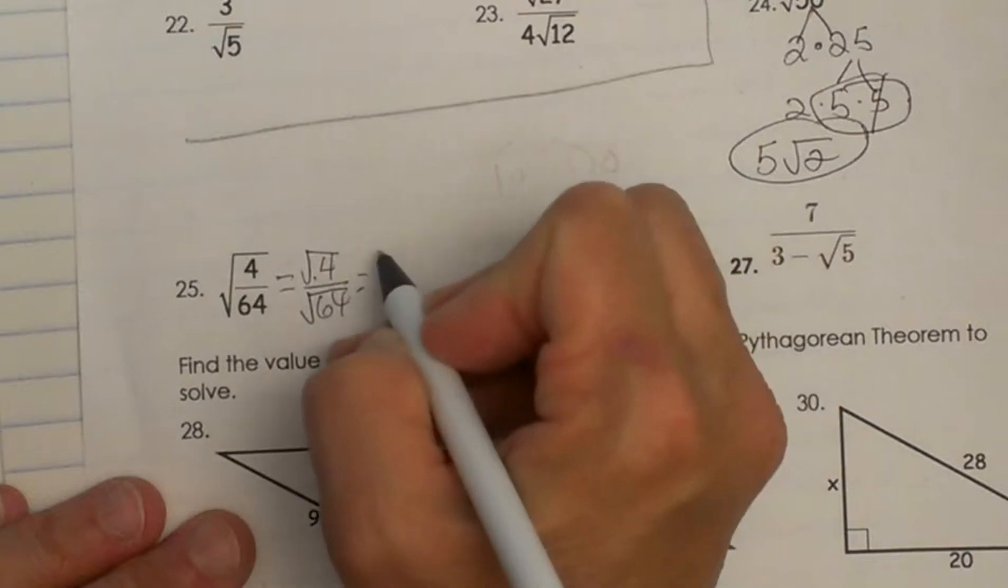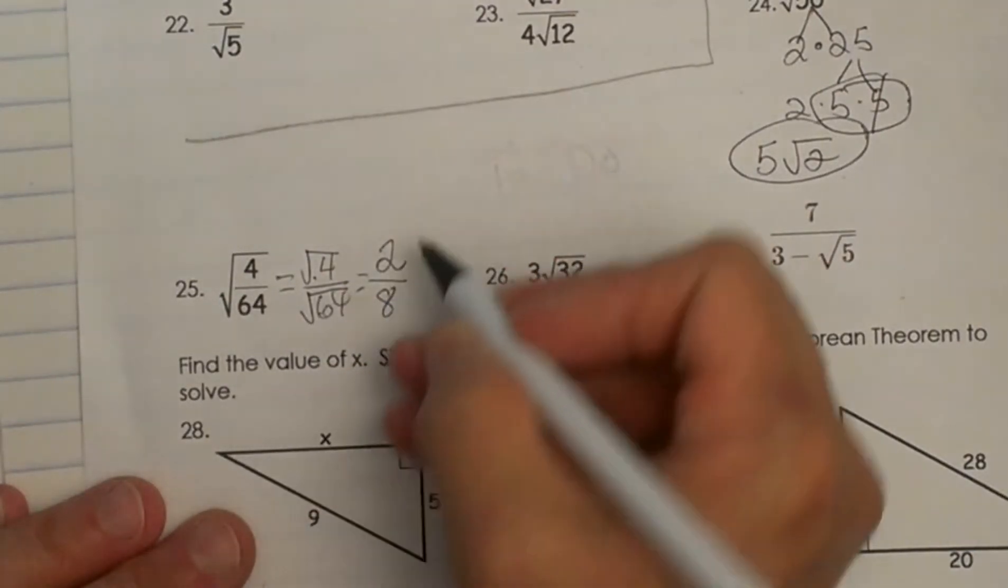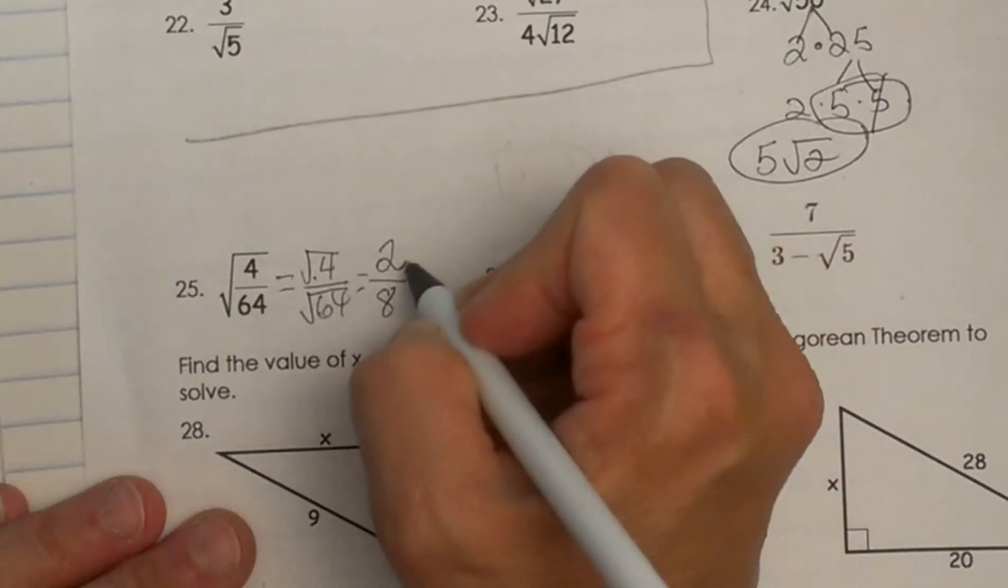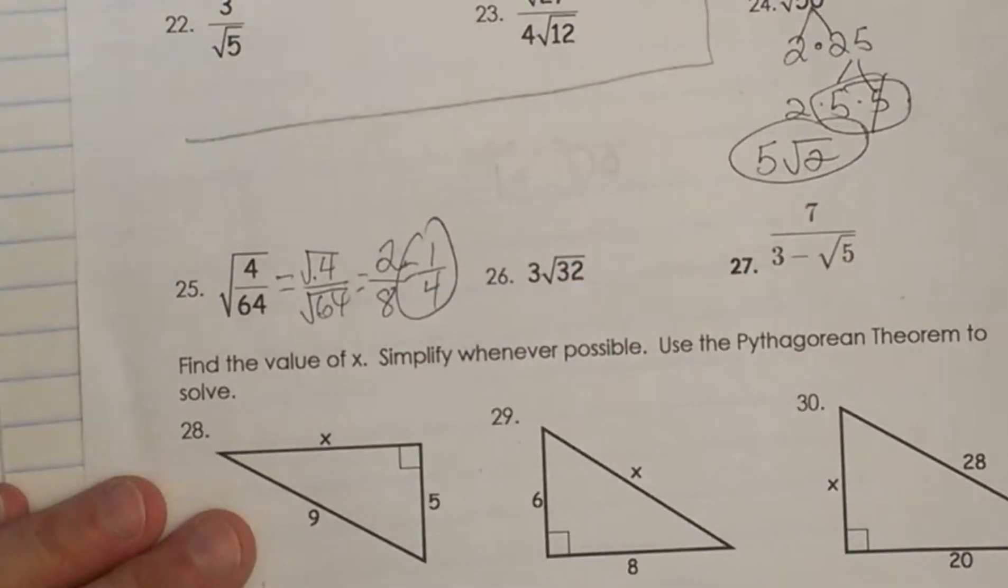And then just simplify each one of those. Because we know the square root of 4 is 2, and we know the square root of 64 is 8. So we have 2/8, and that just reduces to 1/4. So that one you can do that way.